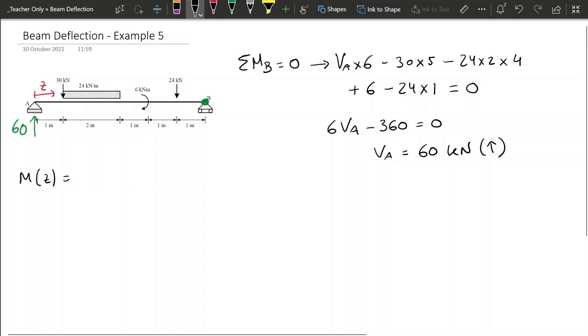So let's start with the load of 60. The load of 60 at the point with distance z from the beginning will create a moment that is positive, so tension on the bottom, so 60 times z. Then we can continue with the other load, so we'll get minus 30 and then z minus 1, because the application of the 30 is at 1.